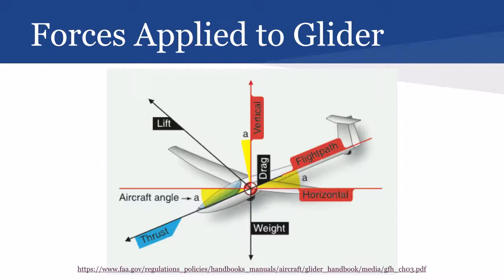Now, here we have the various forces that are being applied to your Elastic Launch Glider. First, you can notice going with the flight path, you have thrust. Thrust occurs when your Elastic Launch Glider is released from the launcher — when it's being propelled into the air, that is its thrust. It's important to note that it will not have thrust throughout the entire launch, unlike airplanes that have continuous thrust and continuous energy being applied.